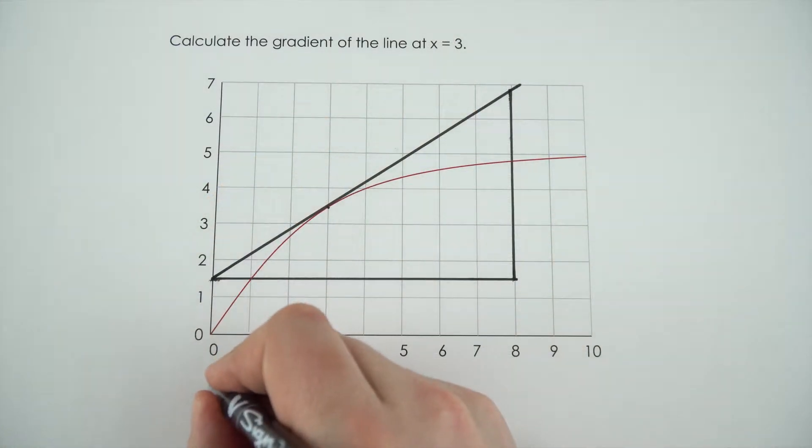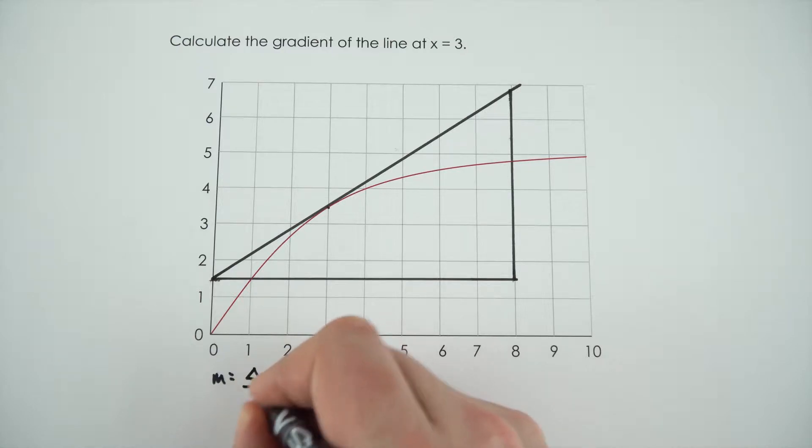Now to work out this gradient, m, the gradient is equal to the change in y divided by the change in x.